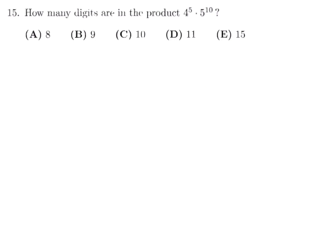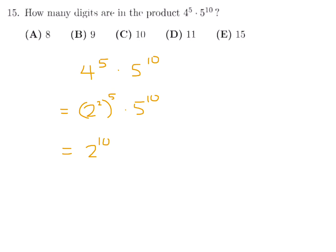Number 15: How many digits are in the product 4^5 × 5^10? Rewrite 4^5 as (2^2)^5 = 2^10. Then 2^10 × 5^10 = (2×5)^10 = 10^10.